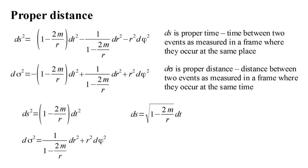The proper distance interval, when dt is zero, has two terms. If we limit motion to the altitude or r direction, then we find our previous result,